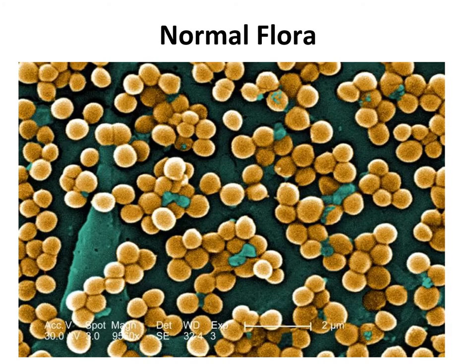The last part of your first line of defense is your normal flora. Normal flora protects you from infection by microbial antagonism — your permanent flora will out-compete transient flora. Transient flora are the microbes you pick up during the course of the day, that you inhale or ingest, and your permanent flora prevents that transient flora from causing disease.